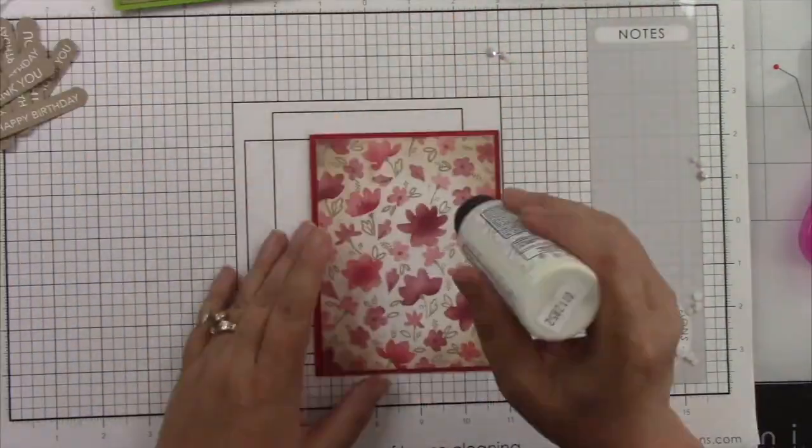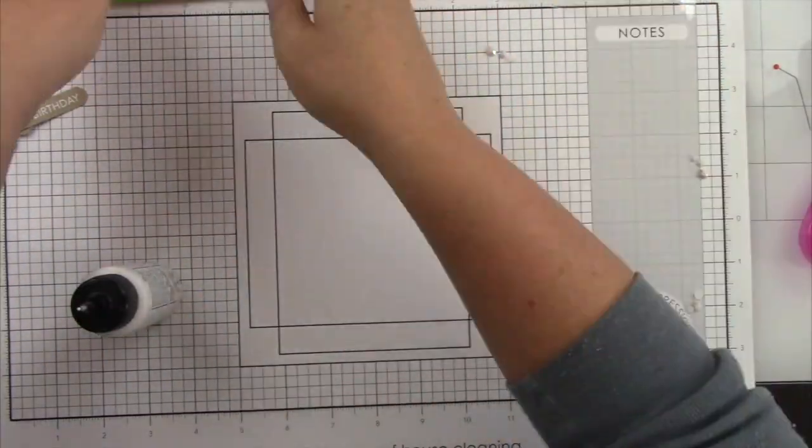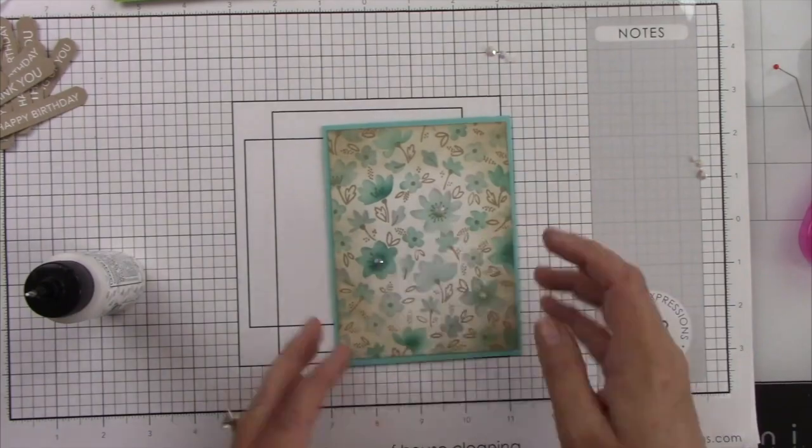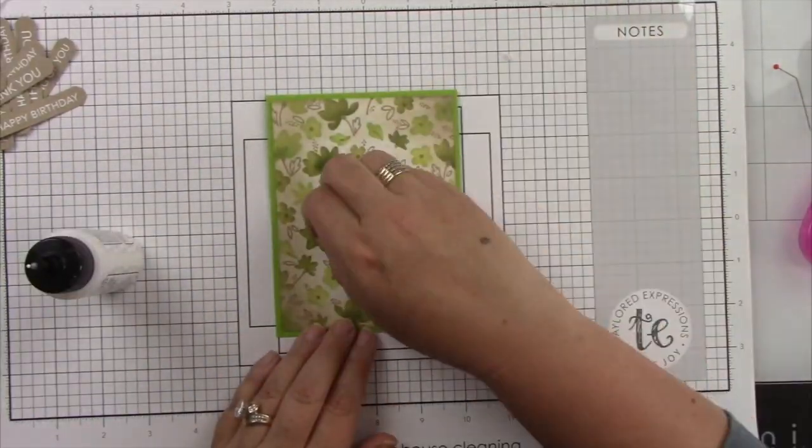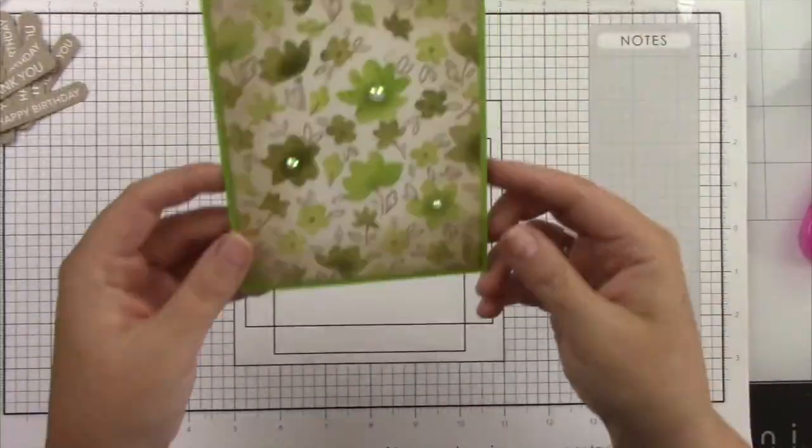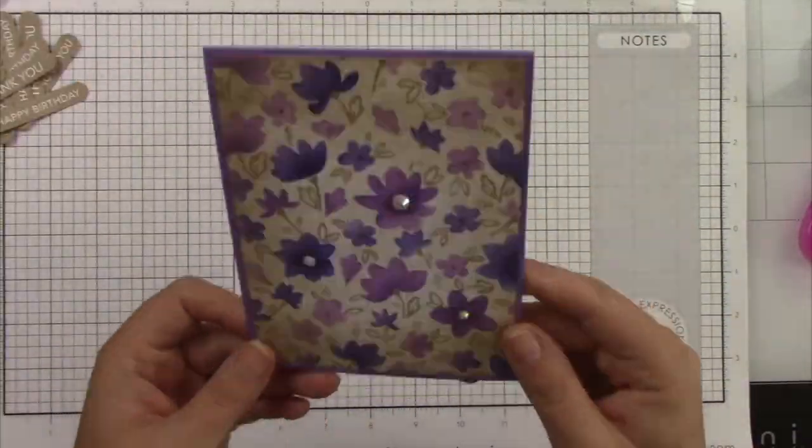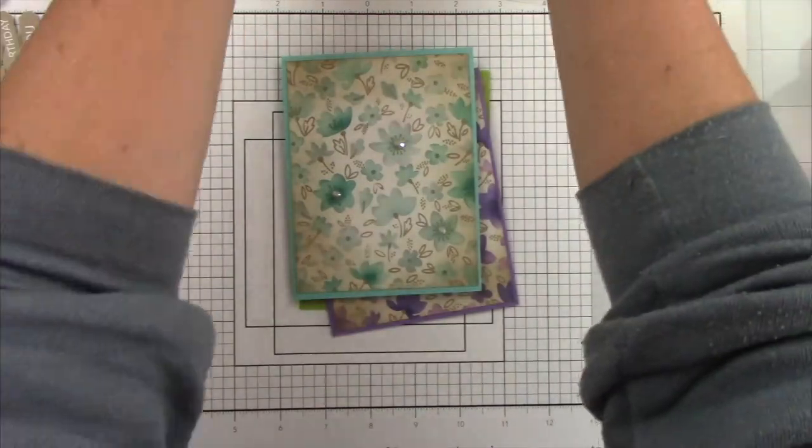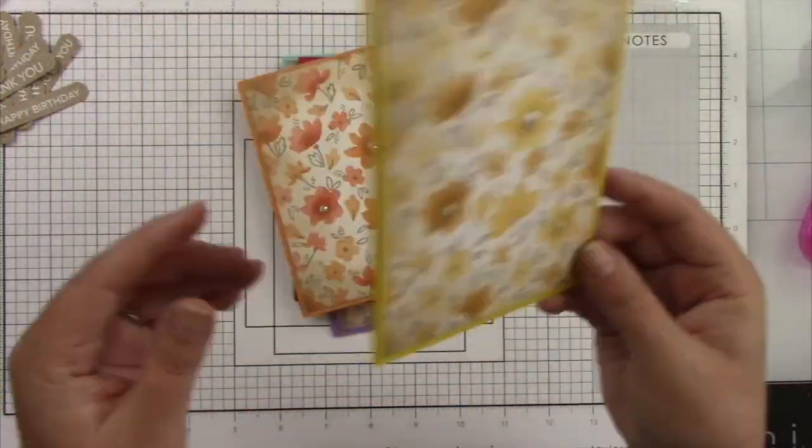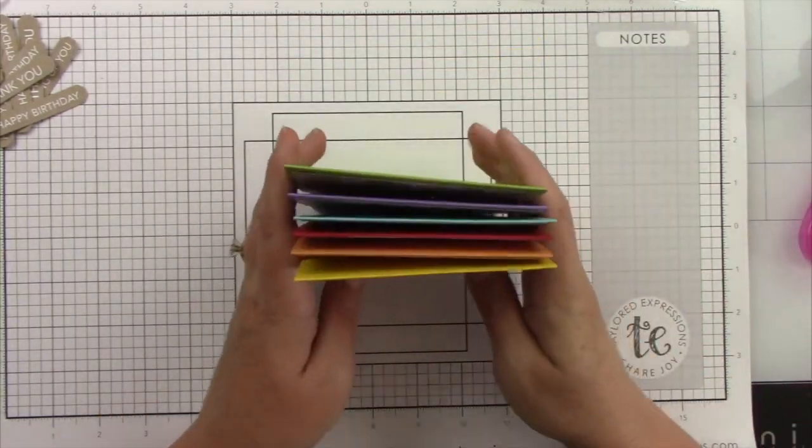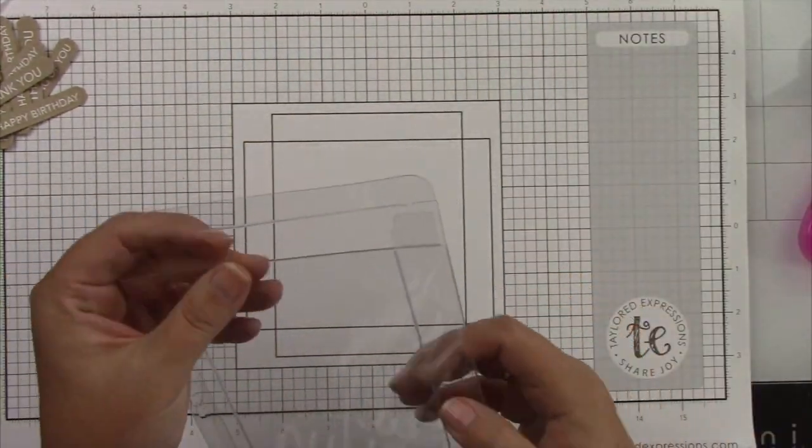Then I decided to come in with some white rhinestones and add three of those with some liquid glue to the centers of these flowers. And then I'm going to show you how to just put this whole little gift together. Now let's look at these cards really quick. Aren't they so pretty? I really love the aging because I just really think it looks like really beautiful old wallpaper.